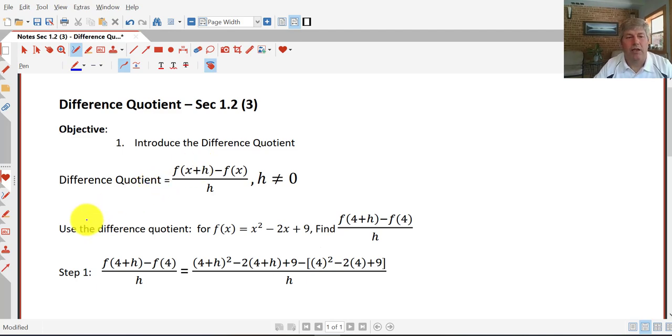In a sample here, we say use the difference quotient for f of x equals x squared minus 2x plus 9. So that's our original function.